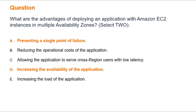Option A: Preventing a single point of failure. This is a correct answer. Deploying EC2 instances in multiple availability zones prevents a single point of failure. Availability zones are designed for physical redundancy and to provide resilience with uninterrupted performance. If one availability zone is affected by an outage, your application can continue running in the other availability zones, ensuring high availability.